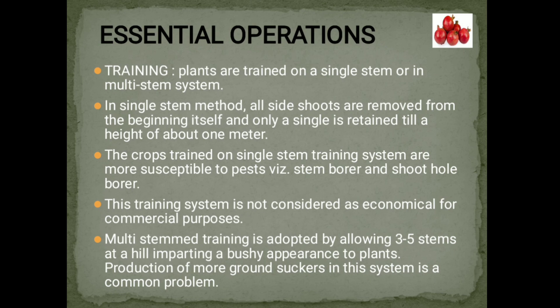Essential Operations — Training. Plants are trained on a single stem or in a multi-stem system. In the single-stem method, all side shoots are removed from the beginning and only a single stem is retained up to a height of about 1 meter. Crops trained on a single-stem system are more susceptible to pests. This training system is not considered economical for commercial purposes. Multi-stem training is adopted by allowing 3–5 stems at a hill, imparting a bushy appearance; production of more ground suckers in this system is a common problem.